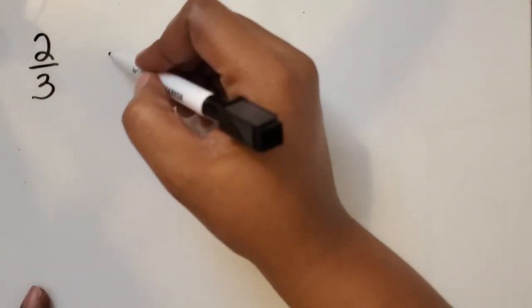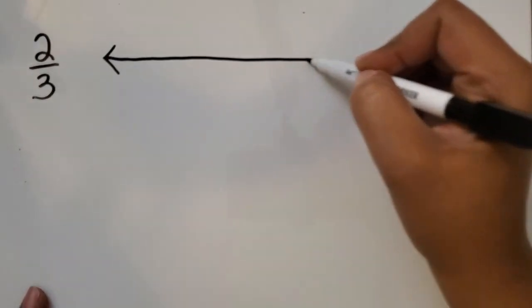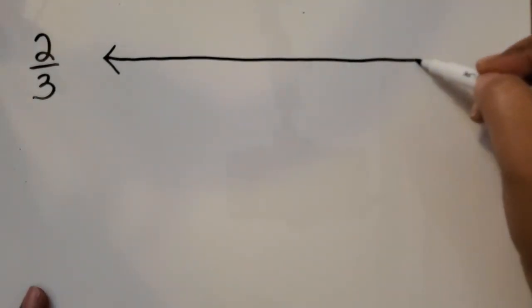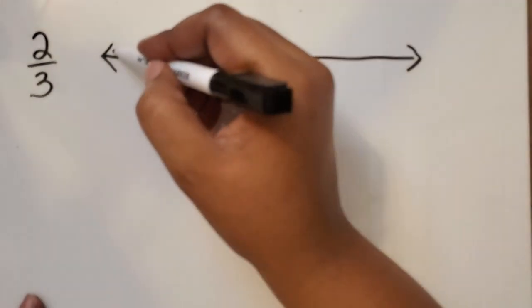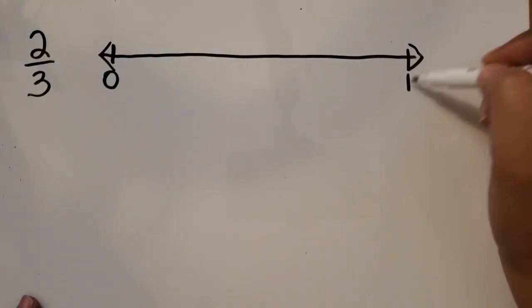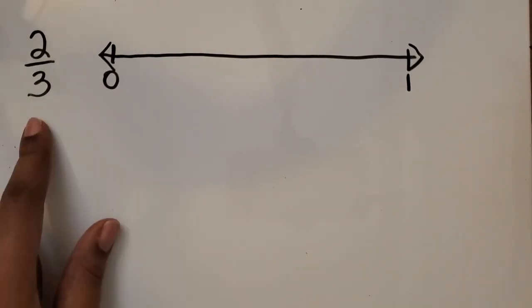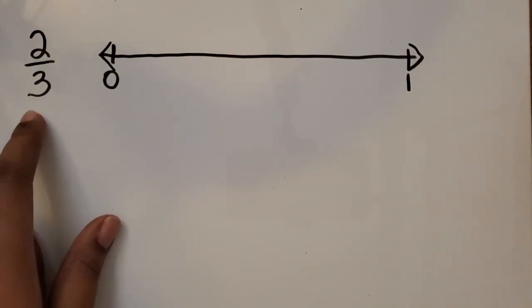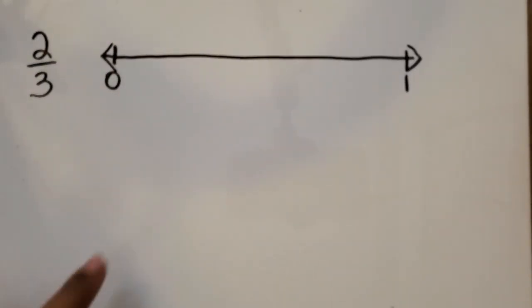We're going to represent fractions on a number line, and we're going to start with the fraction two-thirds. Let's draw a number line just as you would with whole numbers, an open number line. I'm going to represent zero here and represent one as in one whole. What we want to do is represent two-thirds on this number line that is showing one whole.